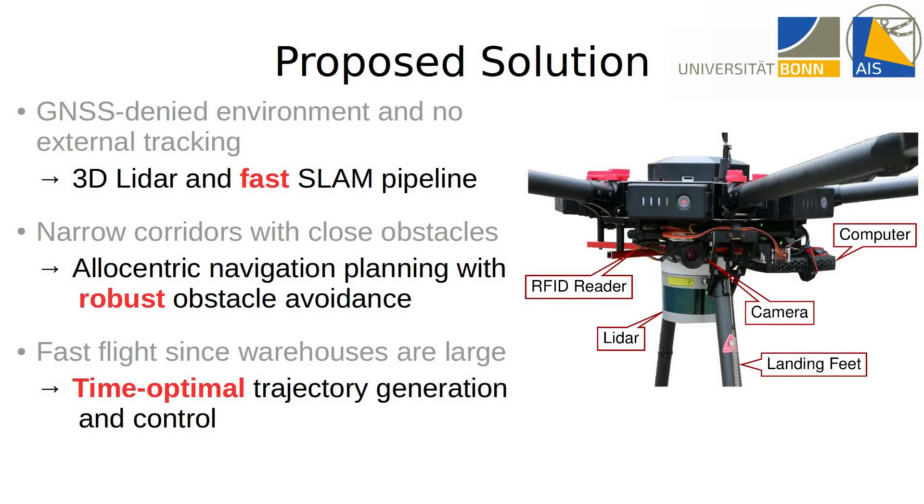We propose a system that localizes itself with a 3D LADAR in combination with a fast SLAM pipeline. Narrow corridors are navigated with onboard navigation planning, while dynamic obstacles are avoided with robust reactive obstacle avoidance. By employing time-optimal closed-loop trajectory generation, the MAV is capable of fast flight.